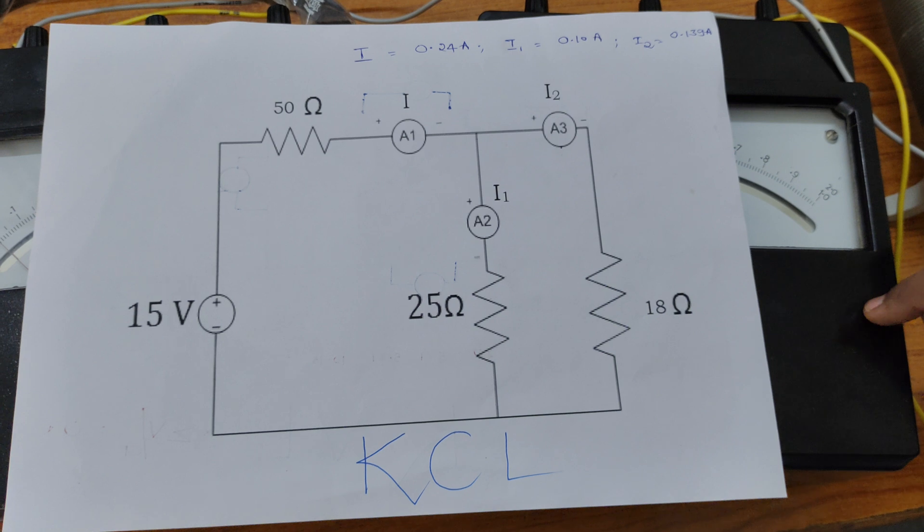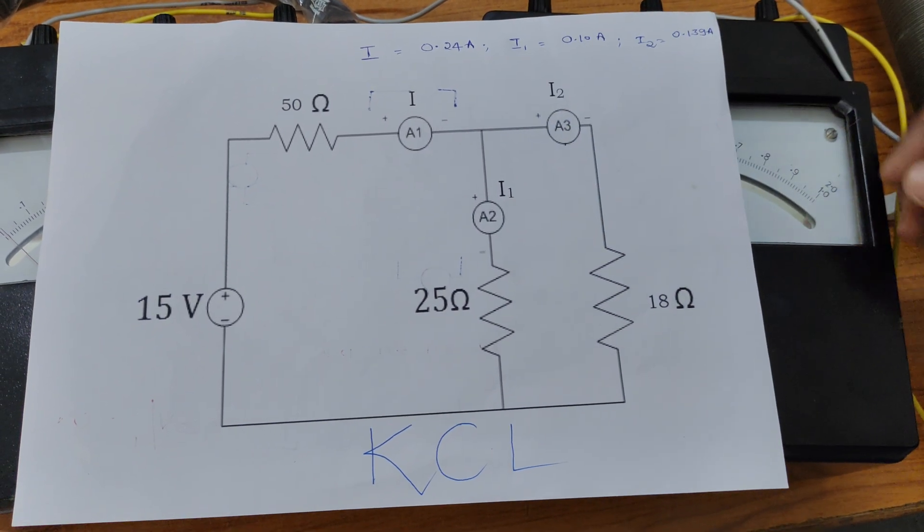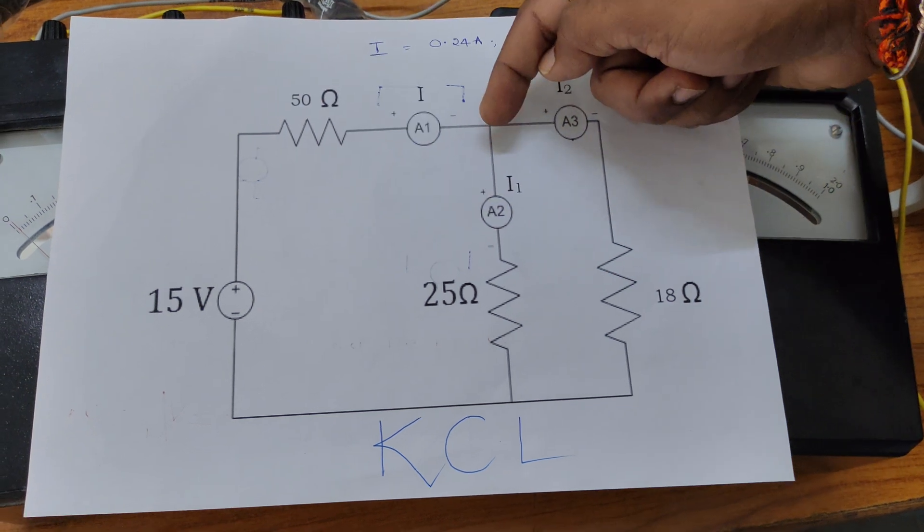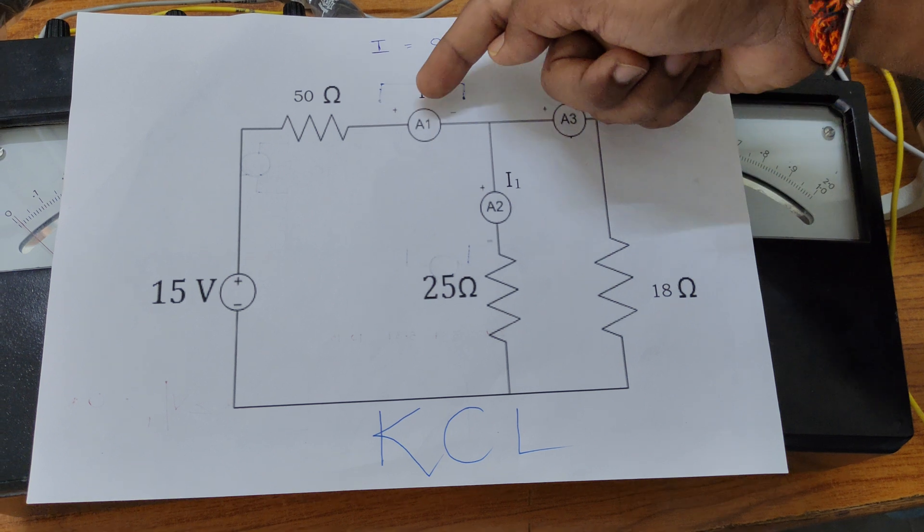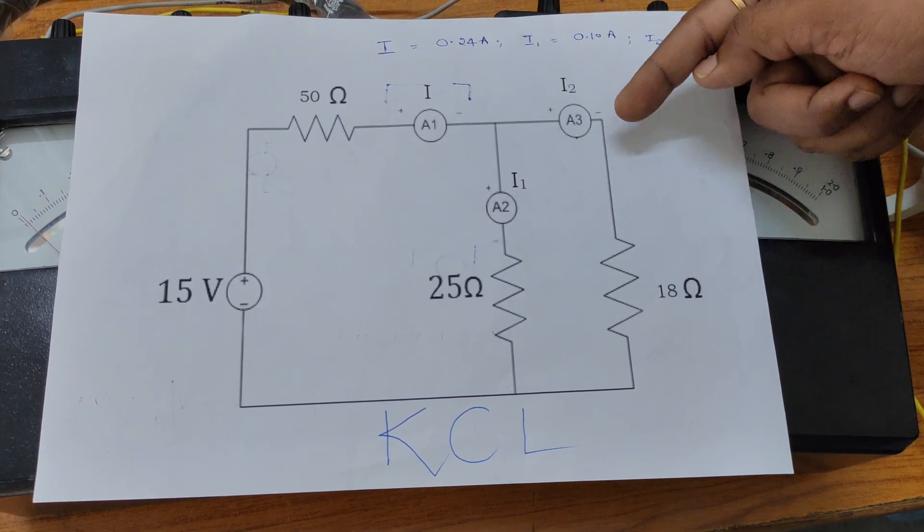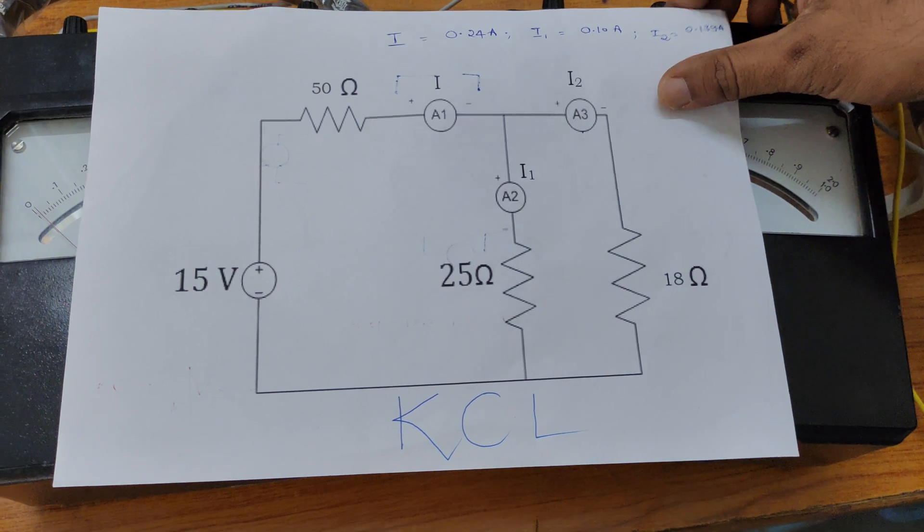The algebraic sum of all the currents meeting at a junction or node is equal to zero. That is, I1 current is entering towards the node and it can leave as I1 and I2. Total current I equals I1 plus I2. I will verify this with the help of a practical session.